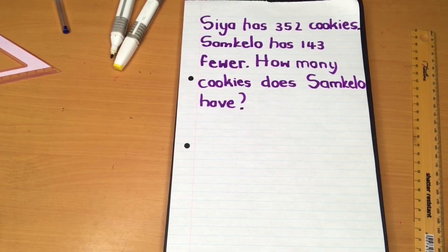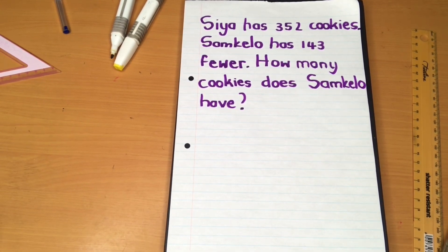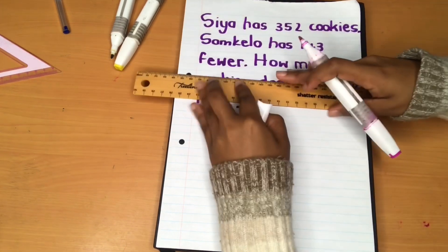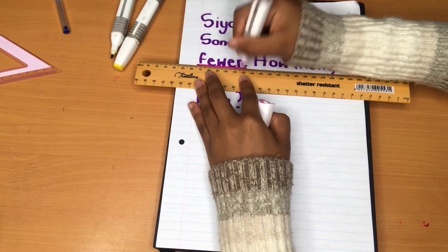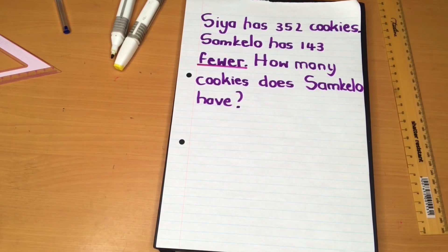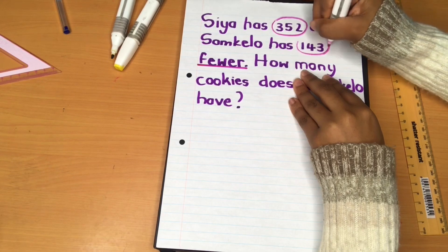Our final word problem reads: Sia has 352 cookies, Samkelo has 143 fewer. How many cookies does Samkelo have? Before we get started, we need to identify what kind of word problem this is by finding our special word, and our special word is 'fewer.' The word 'fewer' shows us that this is a subtraction word problem.